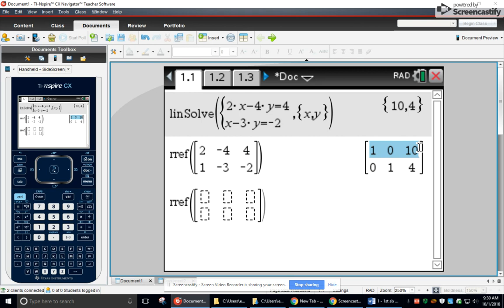See, 1x equals 10. That's what this is saying. 0x, in other words, on the bottom one, or 1y equals 4. So it tells you the same answer, just a little bit different form.